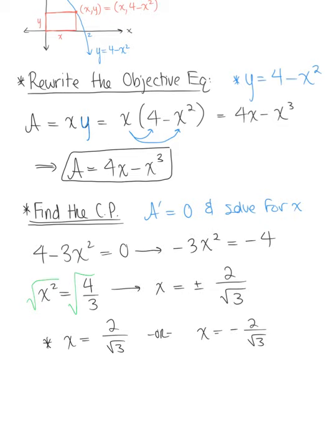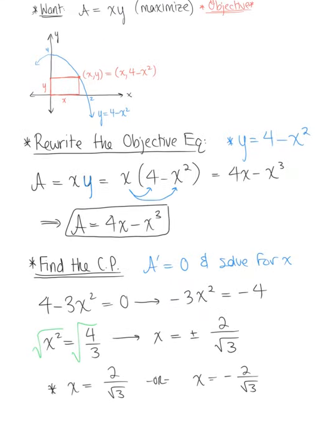And we can use our logic here. You could use your first derivative test or we can think about this logically. We want to recall that we are restricted to quadrant one. We come back up here we can see that this rectangle, the area that we're looking for is restricted to quadrant one.